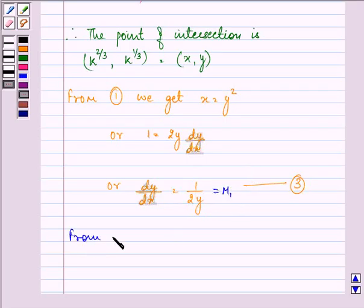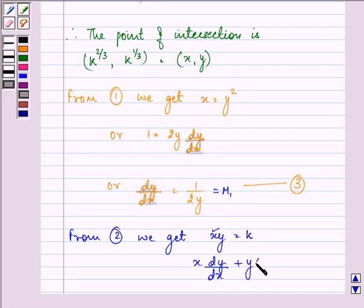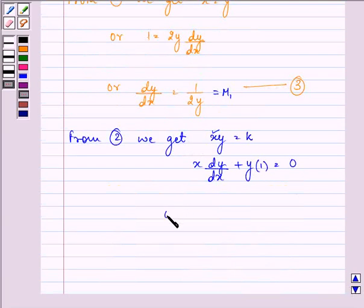From the second equation, we get xy equals k. Differentiating with respect to x using product rule, we have x times dy/dx plus y times 1 equals 0, because the derivative of a constant is 0. Therefore dy/dx equals negative y/x, and let this be m2.